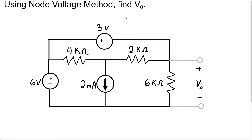In this video we're going to use the node voltage method to find the voltage VO, which is the voltage across the 6k resistor. Because we're going to be using the node voltage method, the first thing we want to do is identify all of our essential nodes and take one of those nodes to be our reference node. I'm going to take the bottom node to be our reference node. I have another node here — node 1, another node here — node 2, and another node here — node 3.